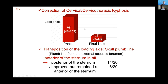One patient had correction loss by C2 pedicle screw failure. Regarding correction rate of kyphotic deformity: the kyphosis angle improved from an average of 76 degrees to an average of 19 degrees at final follow-up. The loading axis transposition from the external acoustic meatus improved in all patients, and the C7 plumb line transferred to the posterior of the sacrum. However, six patients improved but remained anterior to the sacrum.